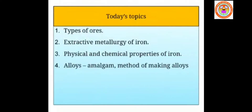Metals are extracted from their ores. Today we are going to learn the various types of ores, the physical and chemical properties of the metal iron, what are alloys, what is an amalgam, and the methods of making alloys. Today's topics are: types of ores, extractive metallurgy of iron, physical and chemical properties of iron, alloys, amalgam formation, and method of making alloys.